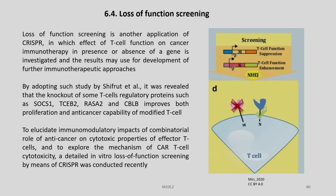By adopting such a study, Shifrut et al. revealed that the knockout of some T-cell regulatory proteins such as SOCS1, TCEB2, RASA2, and CBLB improves both proliferation and anti-cancer capability of modified T-cells. To elucidate immunomodulatory impacts of the combinatorial role of anti-cancer on cytotoxic properties of effector T-cells and to explore the mechanism of CAR T-cell cytotoxicity, a detailed in-depth loss-of-function screening by means of CRISPR was conducted recently, and this figure is obtained from Miri 2020.